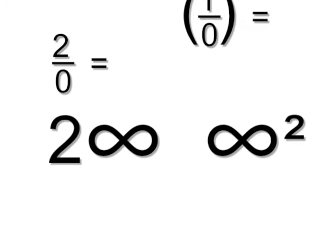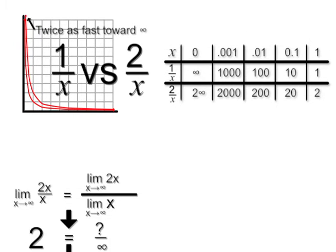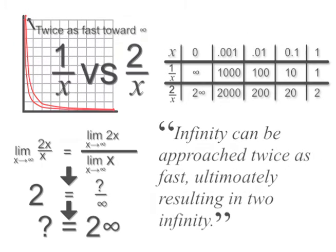Another property of infinite mathematics is the existence of 2 infinity and infinity squared. 2 divided by 0 equals 2 infinity, and 1 divided by 0 squared equals infinity squared. The existence of 2 infinity can be proven graphically, numerically, algebraically, and verbally.